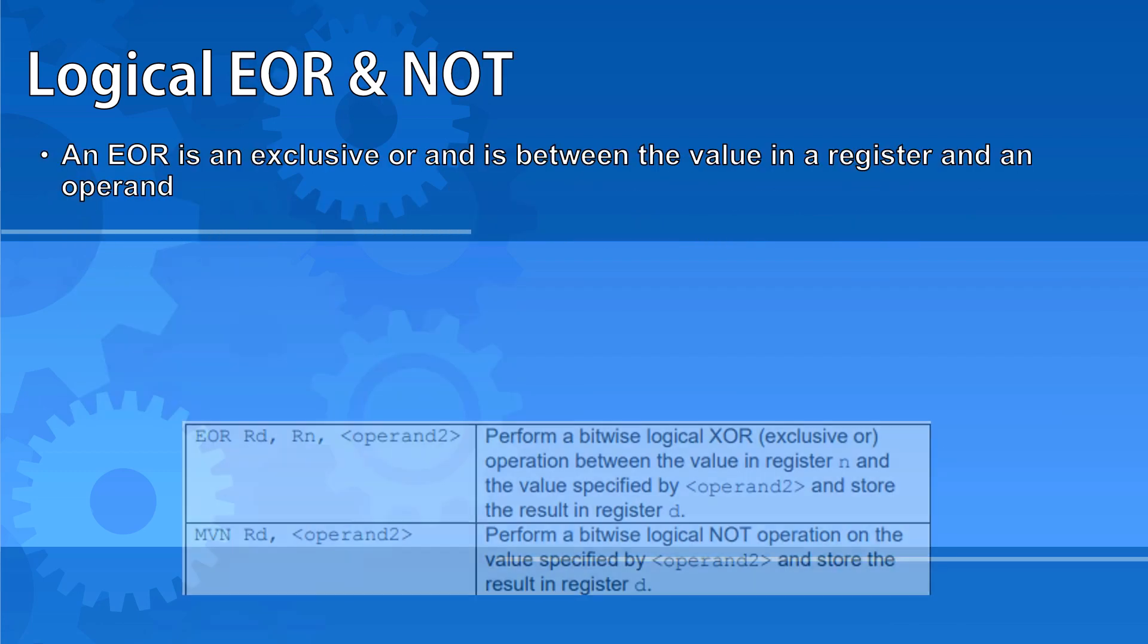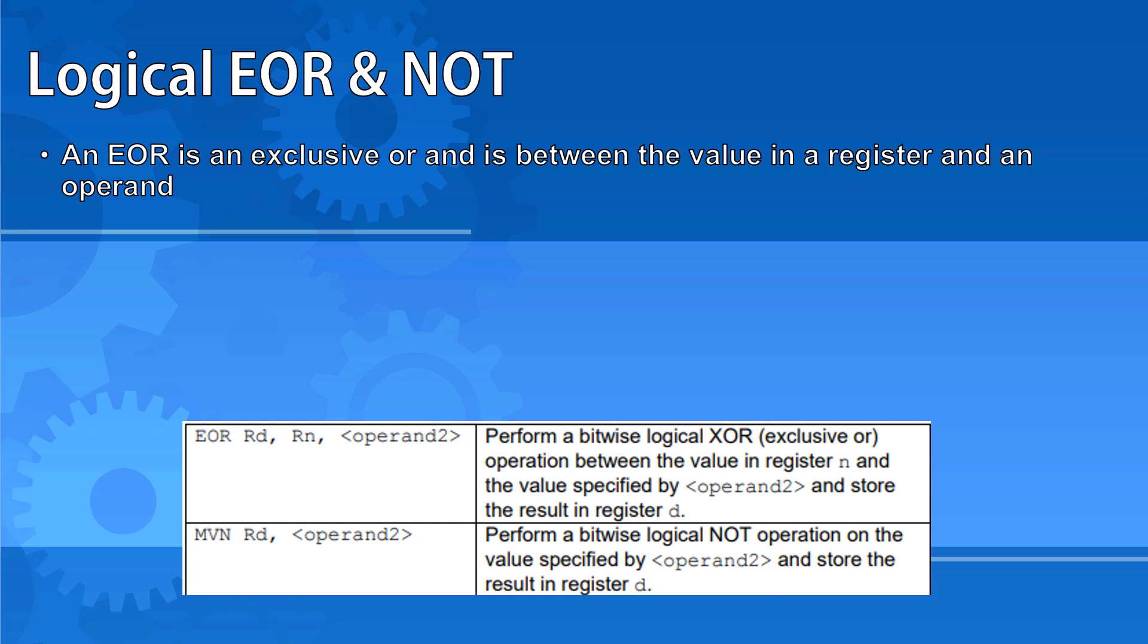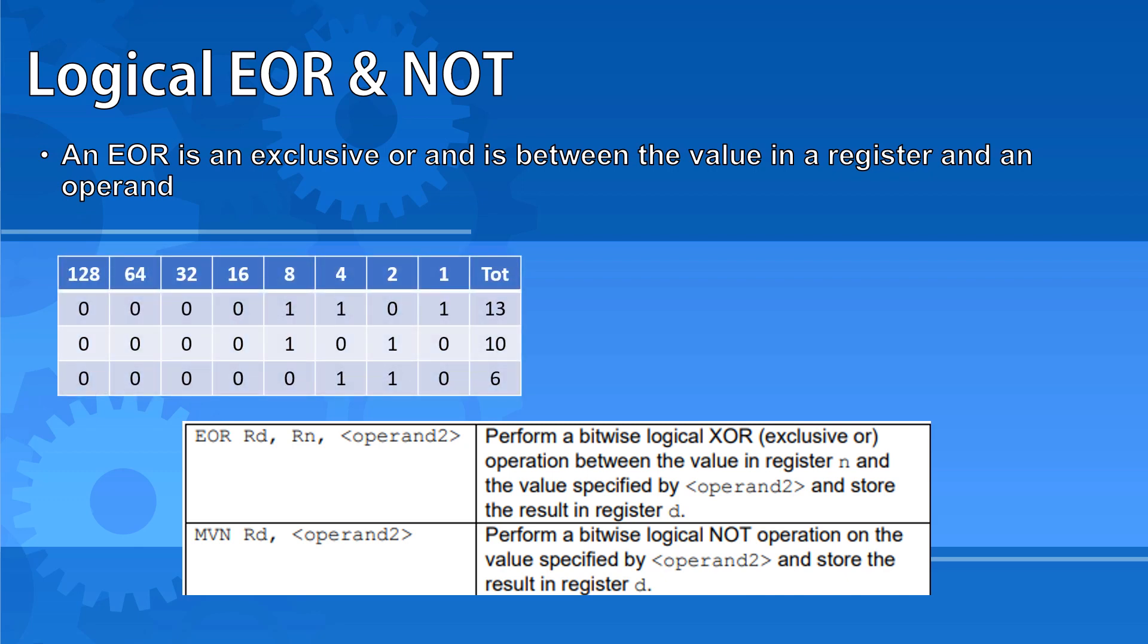EOR is the assembly code for an exclusive OR. It's also between the value in a register and an operand, meaning you could supply it another value from a register, or you could give it a number specifically. Here we can see the result of an EOR, where only if the two values are different will the output receive a 1.